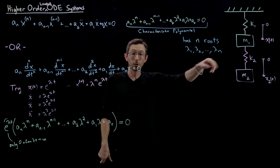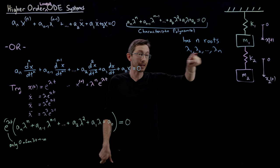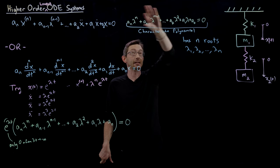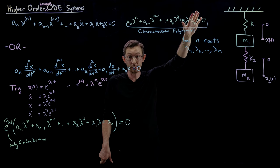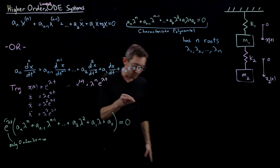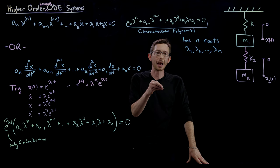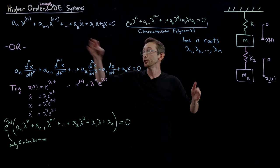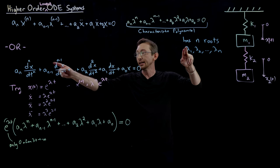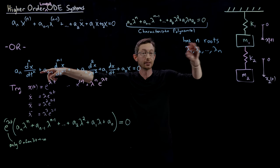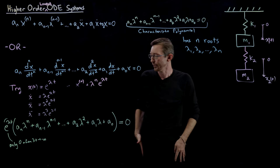Now, some of those might be equal — there might be repeated roots — but there will be n λs that satisfy this characteristic polynomial. And so in general, that is going to allow us to write the general solution x(t) in terms of linear combinations of e^(λt) for each of these λs.